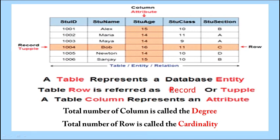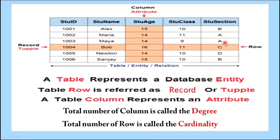A table represents a database entity. A cell is the rectangular box that contains a value in the table — it is the intersection point of a row and a column, for example the value 1001. The total number of columns is called the degree. For example, if there are 5 columns, the degree of the table is 5. The total number of rows is called cardinality.